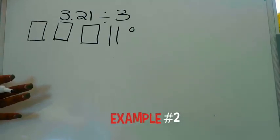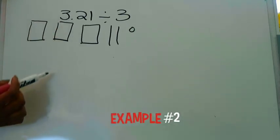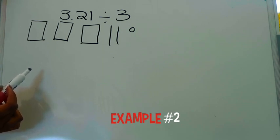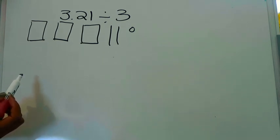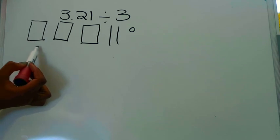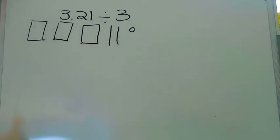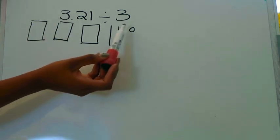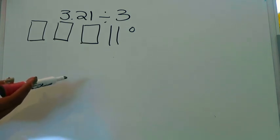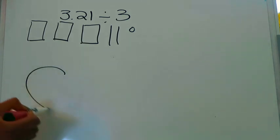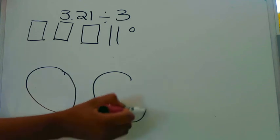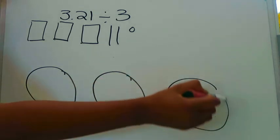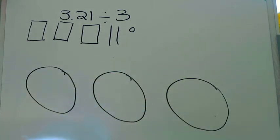This next example is a bit more challenging because you're dealing with a larger decimal. We have three and twenty-one hundredths divided by three. I've already modeled three and twenty-one hundredths. My divisor is three, so I need to create space for three groups: group one, group two, group three.